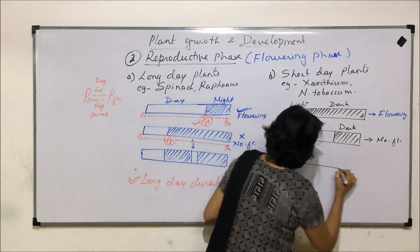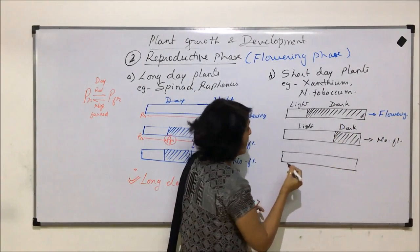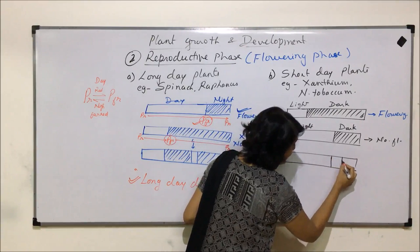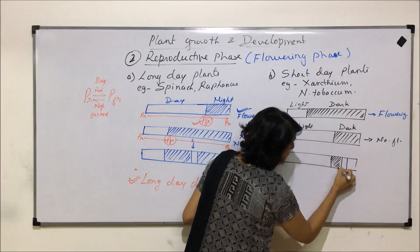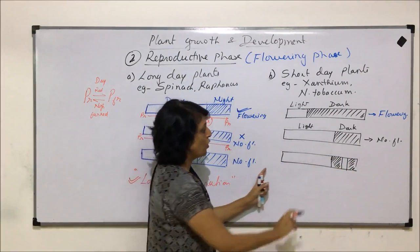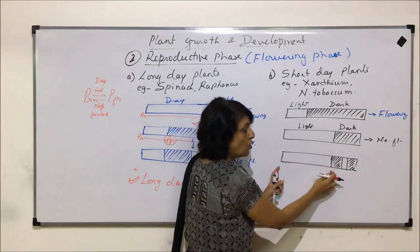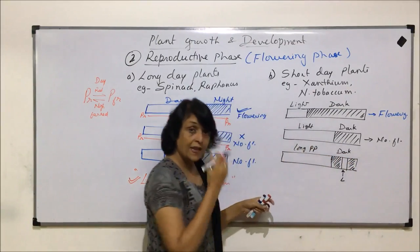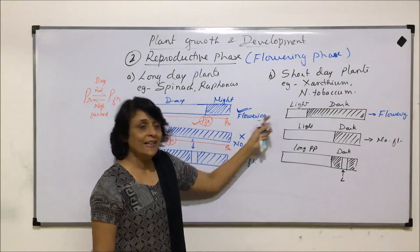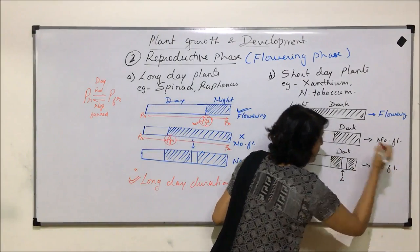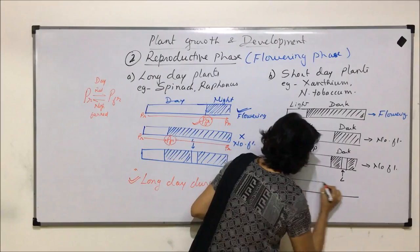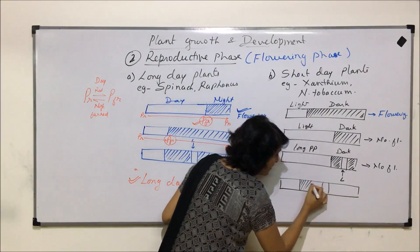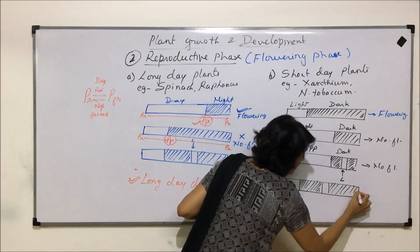Scientists performed one more experiment with these plants. They provided a long day, and the dark period was interrupted by a light period. So the photoperiod was long, and the dark was interrupted with light. This is again not the condition required by the plant, so here also there is no flowering. One more experiment was done — exactly the same as what is required by the plant, but the long night or dark phase was interrupted with light.